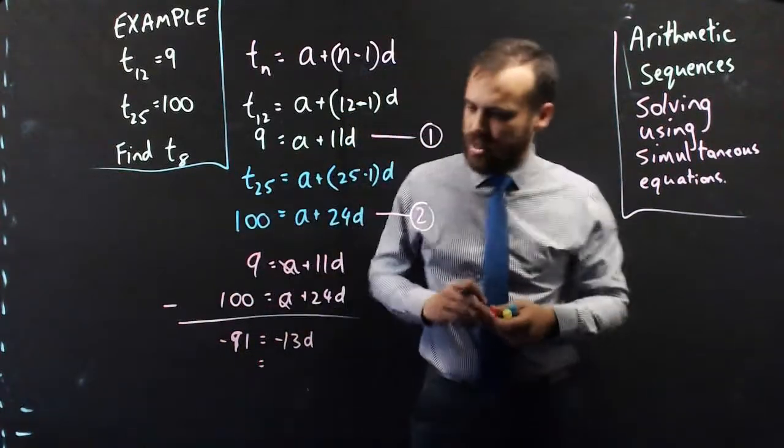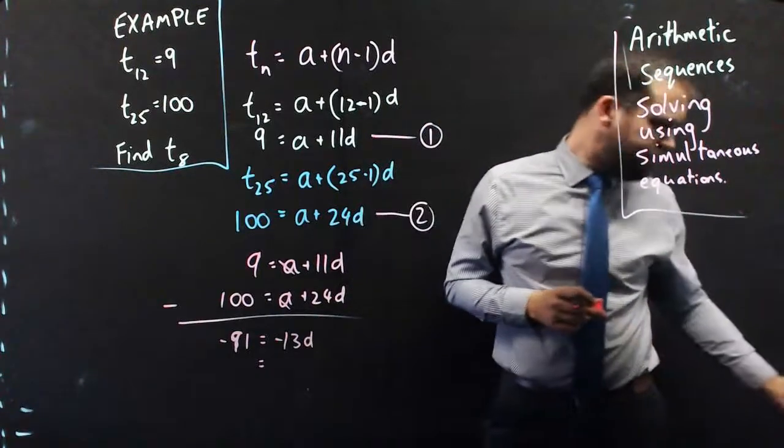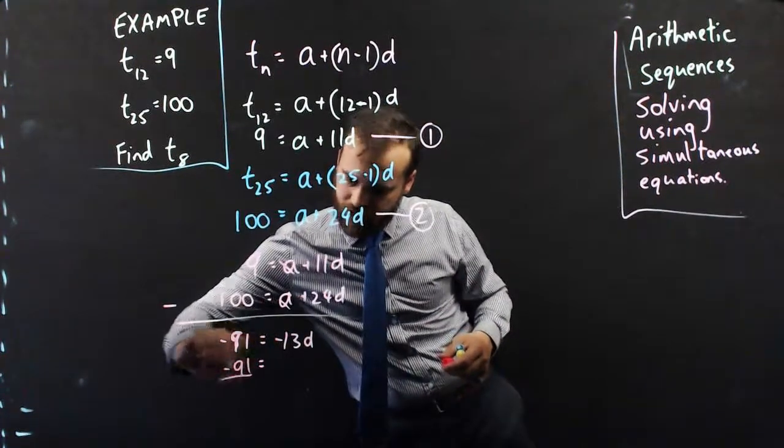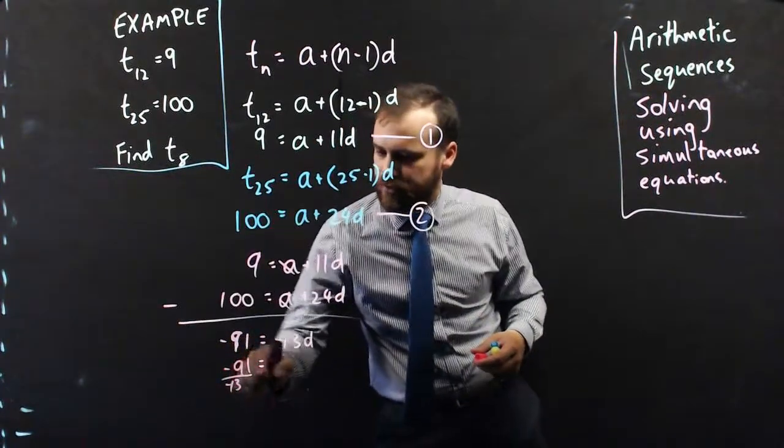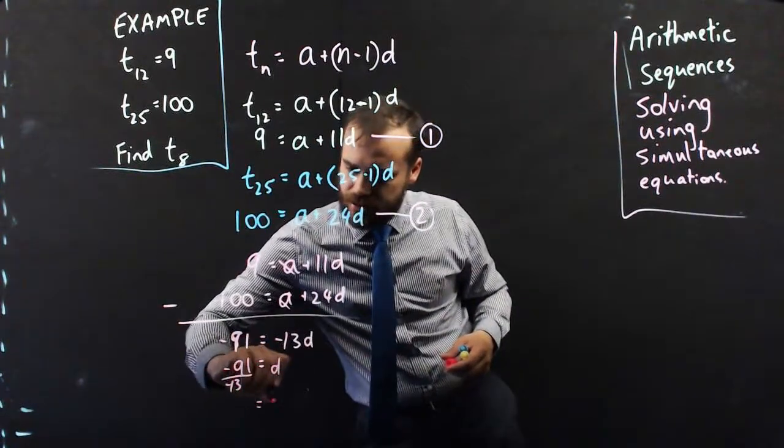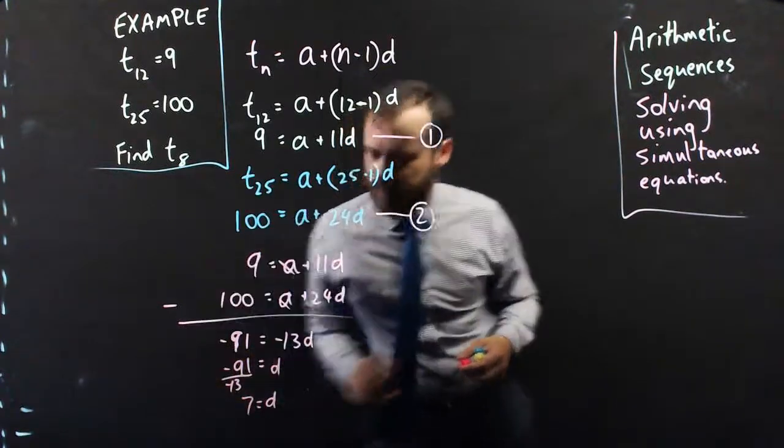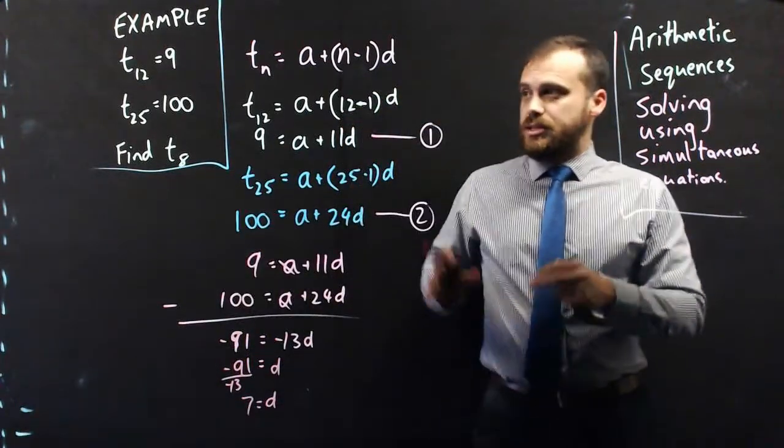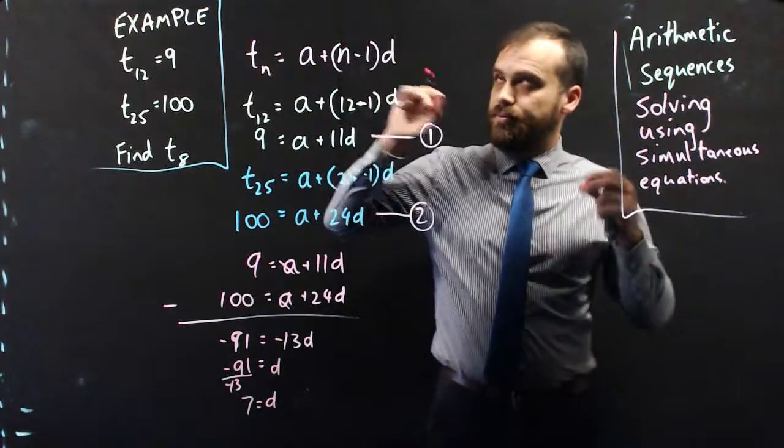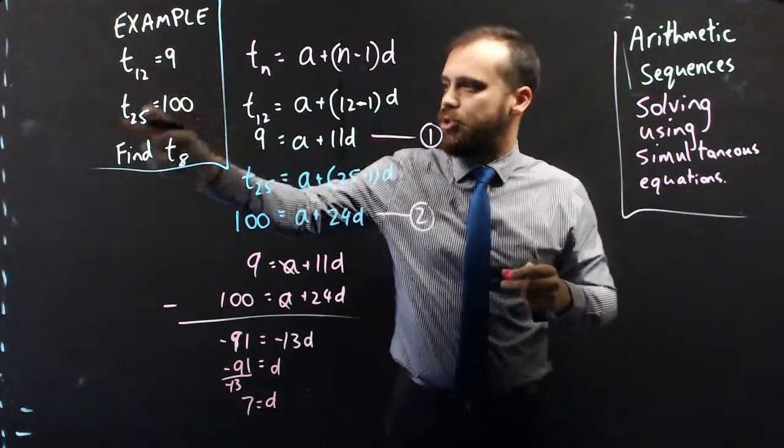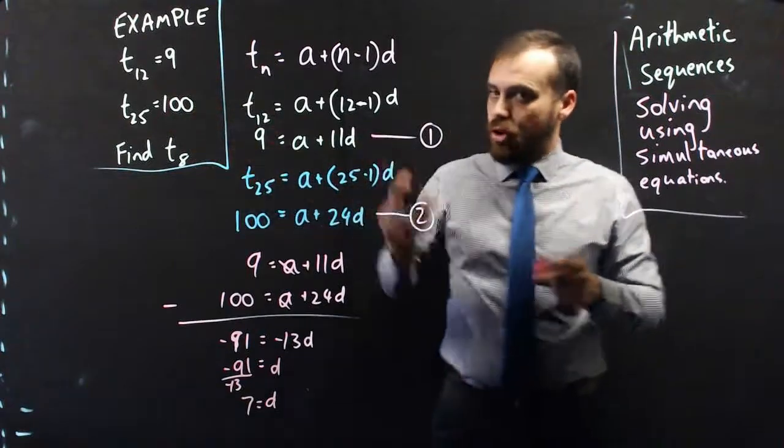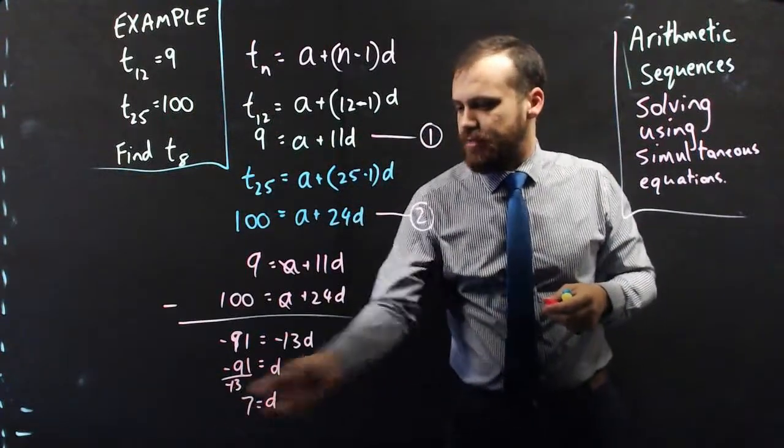Put that into a calculator. I'm sure some number will pop out. So just before I do that, need to rearrange, don't I? Negative 91 over negative 13 equals d. d is equal to 7. So that means that in an arithmetic sequence where term 12 is 9 and term 25 is 100, the common difference between each one is 7.